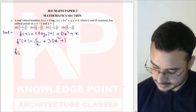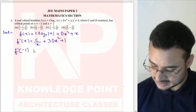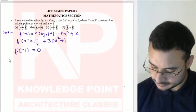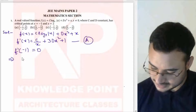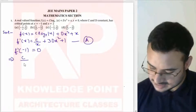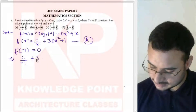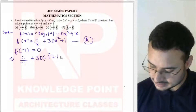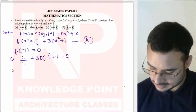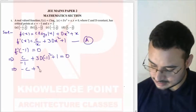Now put x = -1; the derivative is equal to 0. Call this equation A. Substituting x = -1 into equation A: c/(-1) + 3d·(-1)² + 1 = 0, which gives -c + 3d + 1 = 0. This is our first equation.